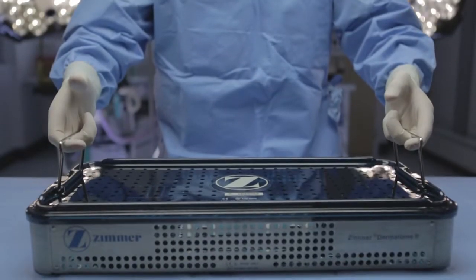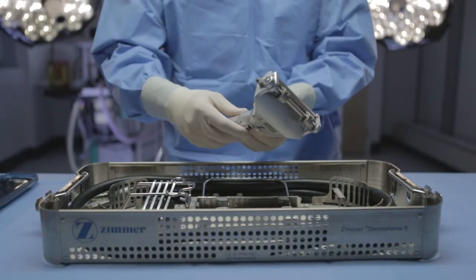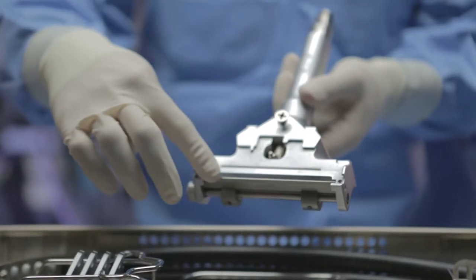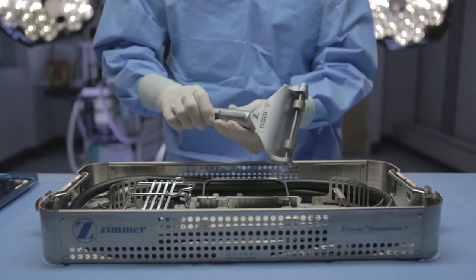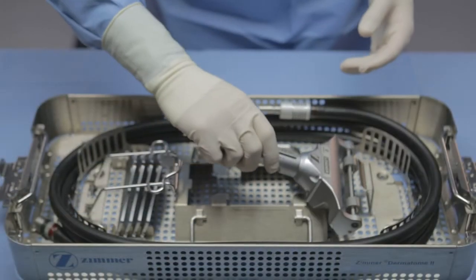Carefully inspect all the components, especially before each use. Pay particular attention to the underside of the Dermatome where the blade oscillates. There should not be any burrs, nicks, gouges or scratches. If noticeable damage does exist, return the instrument to Zimmer for repair.